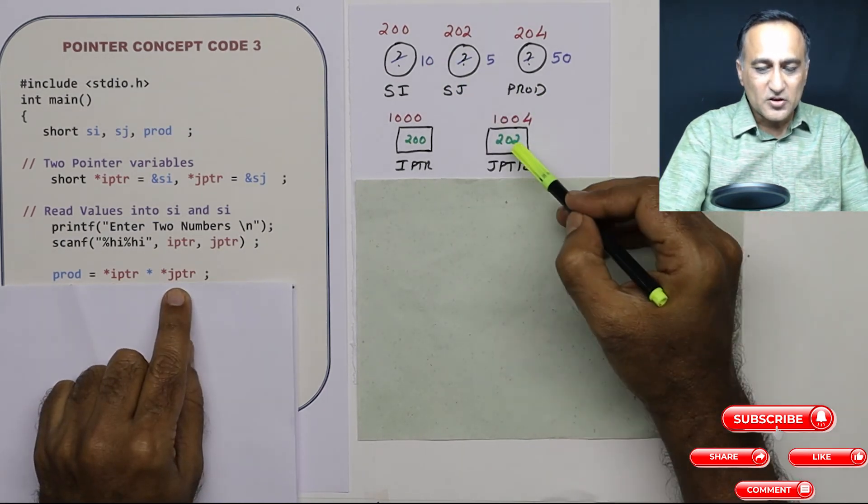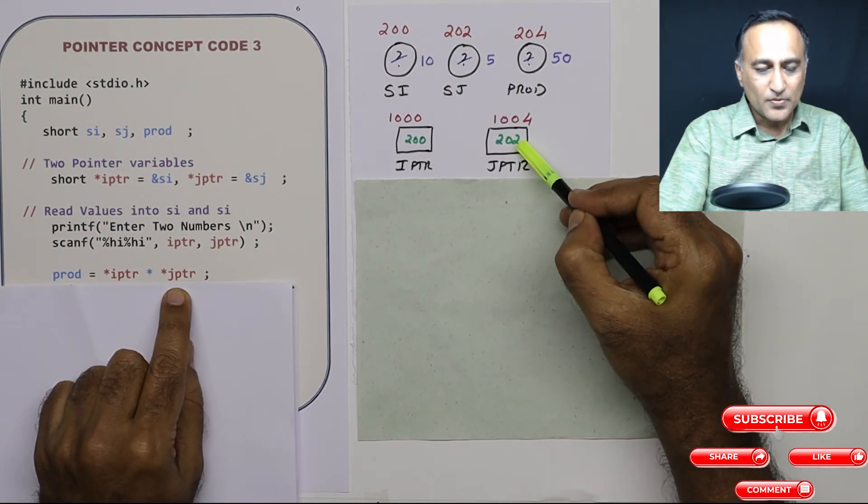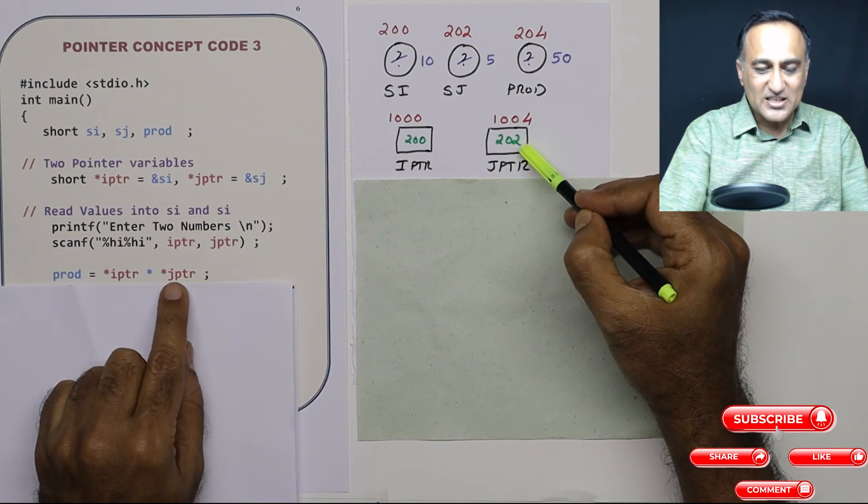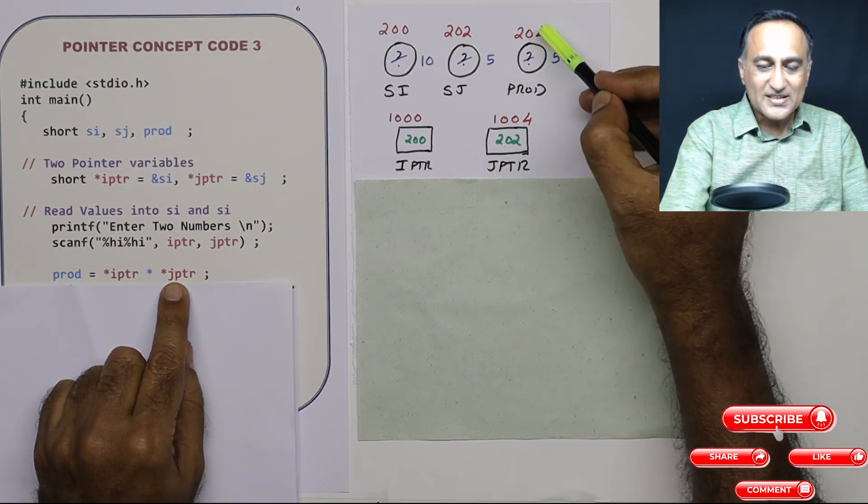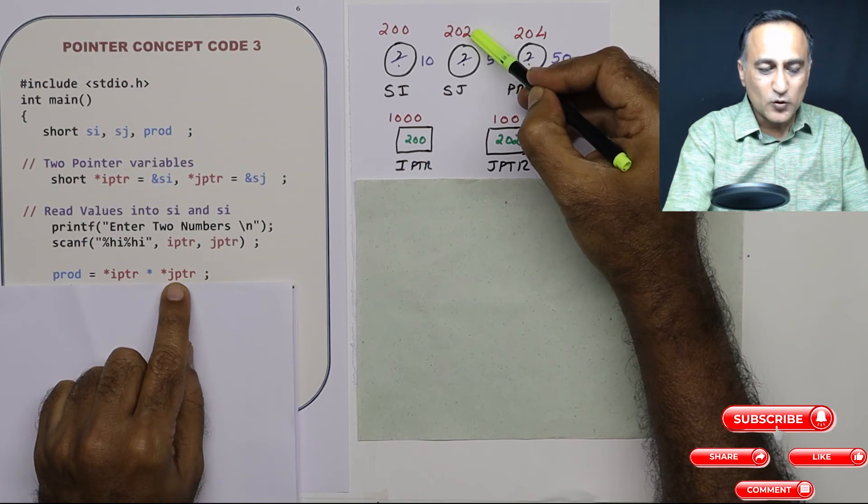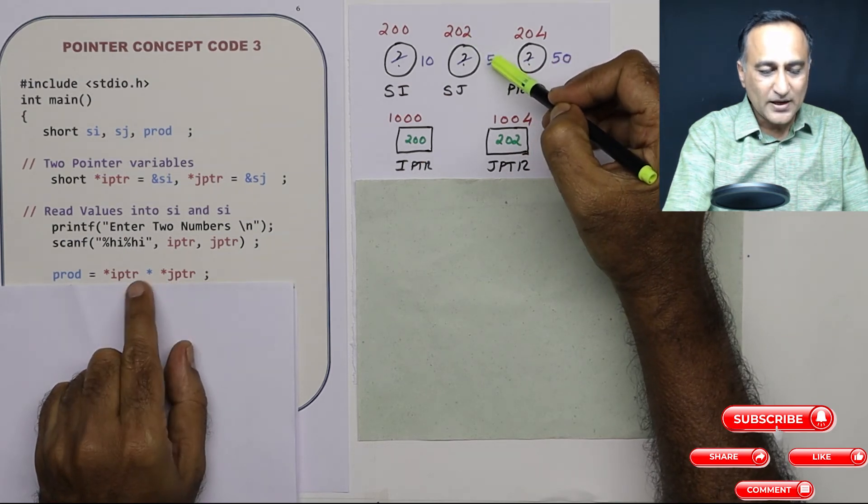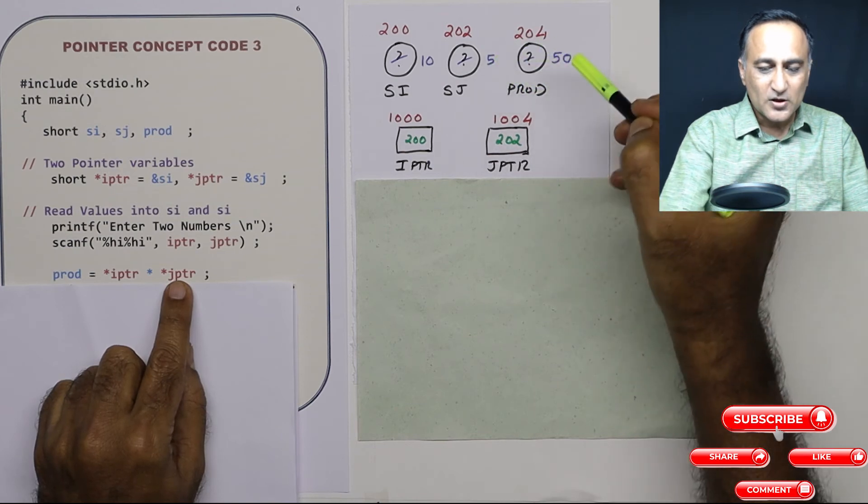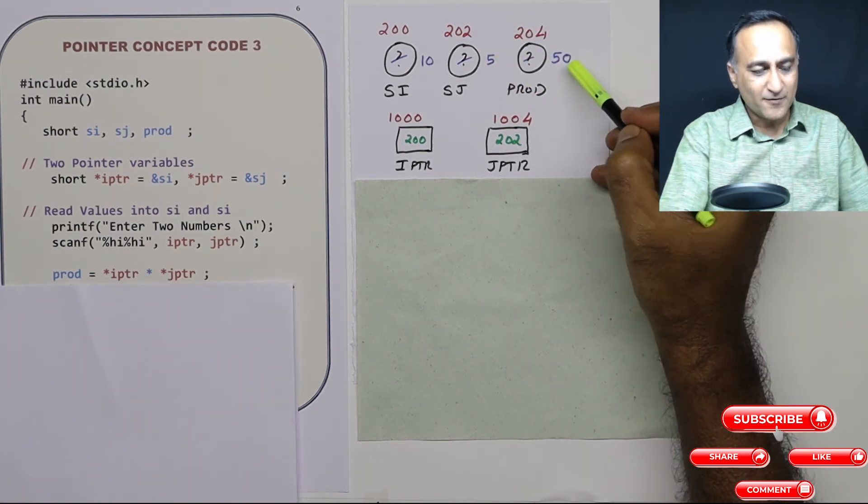What is JPTR? JPTR is 202. What does star JPTR indicate? What is the value or what is the content at address 202, which is 5. So 10 into 5 is going to be 50. So product will end up becoming 50.